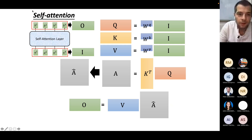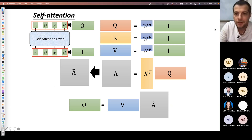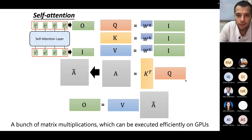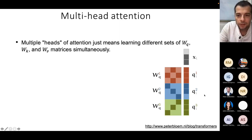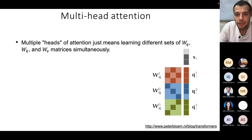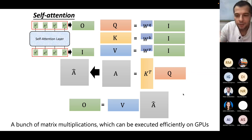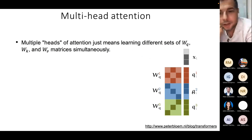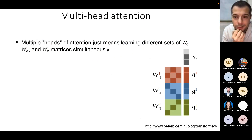All operations in self-attention are just matrix multiplications, which can be executed efficiently on GPUs. This means transformers can be efficiently trained on GPUs and are quite fast, though very large models with billions of parameters can become slow again.